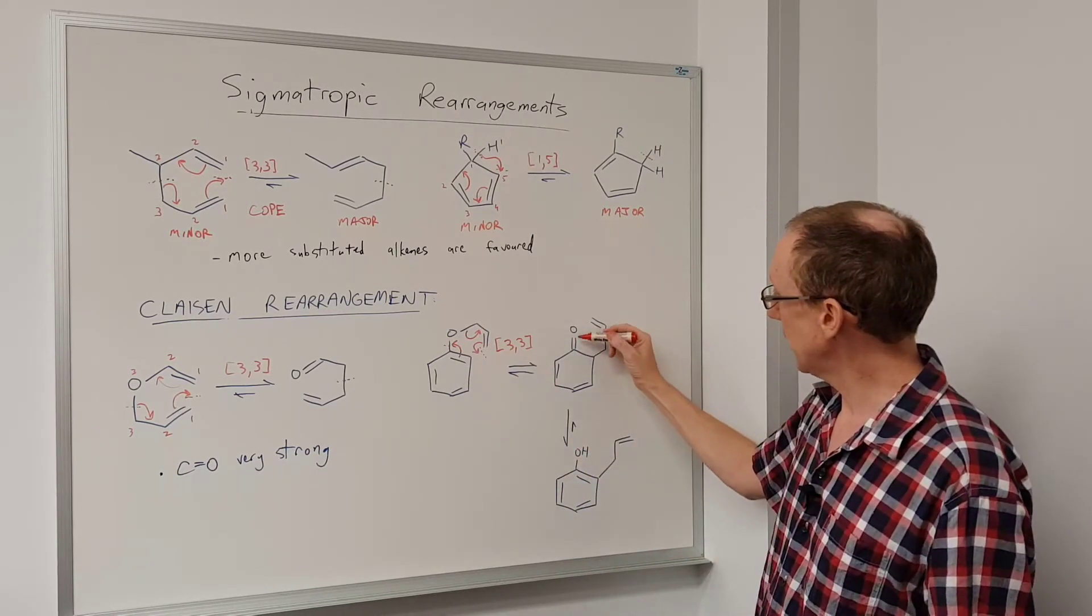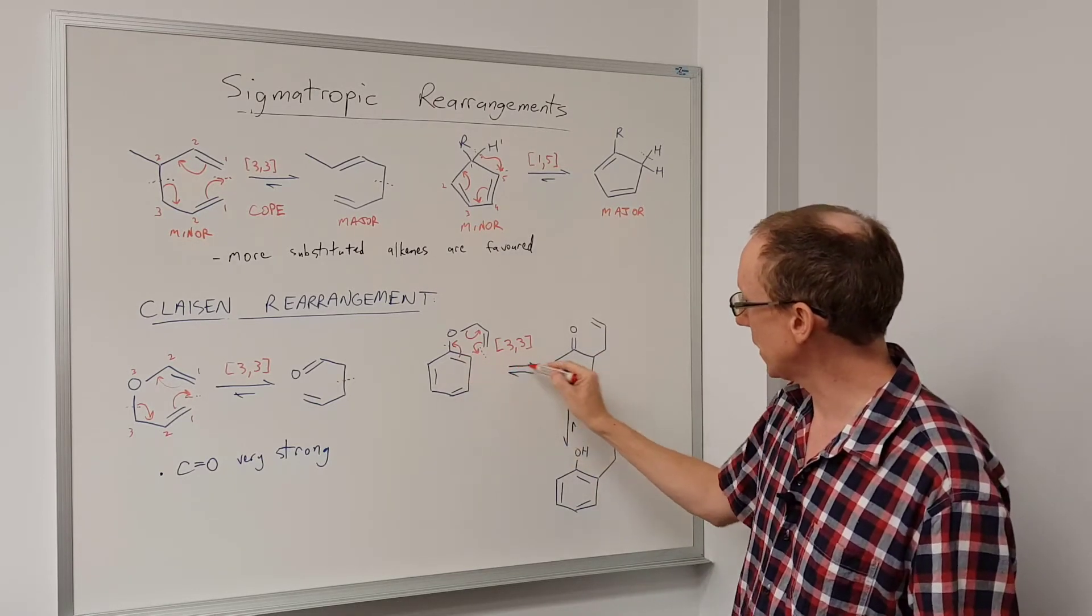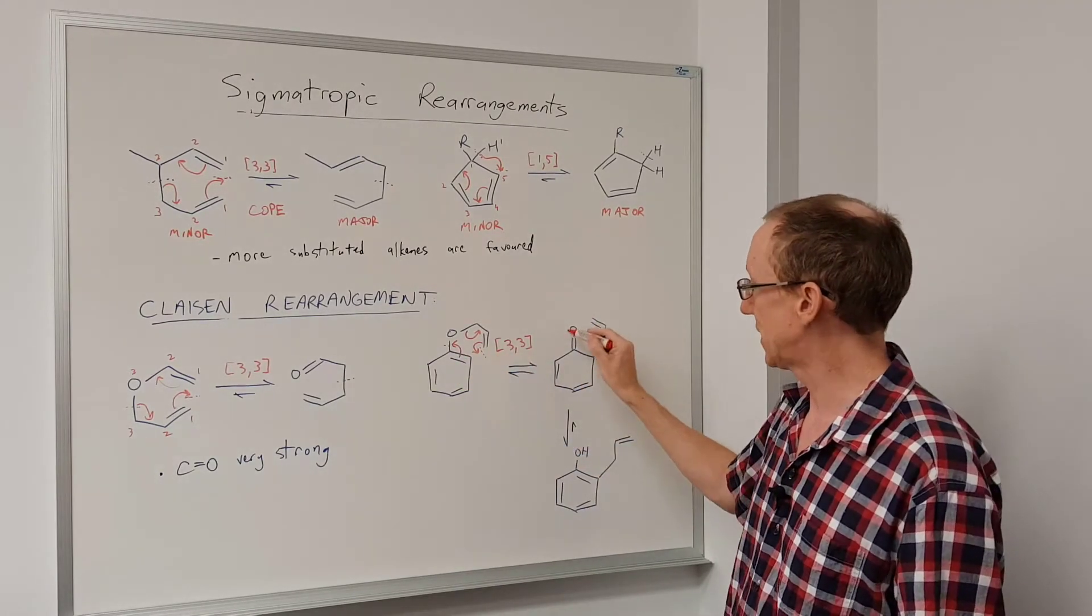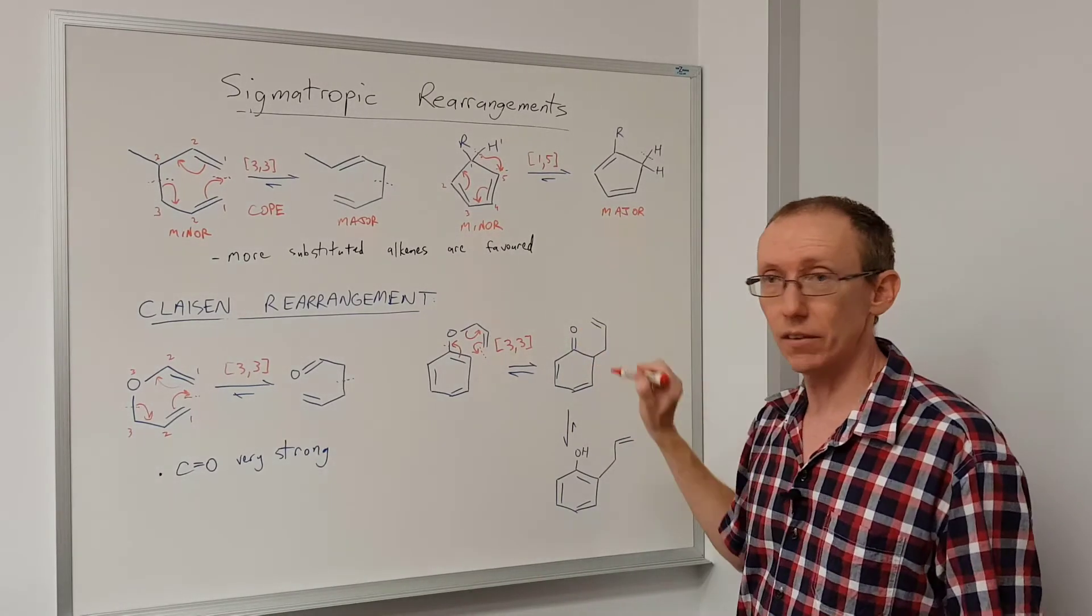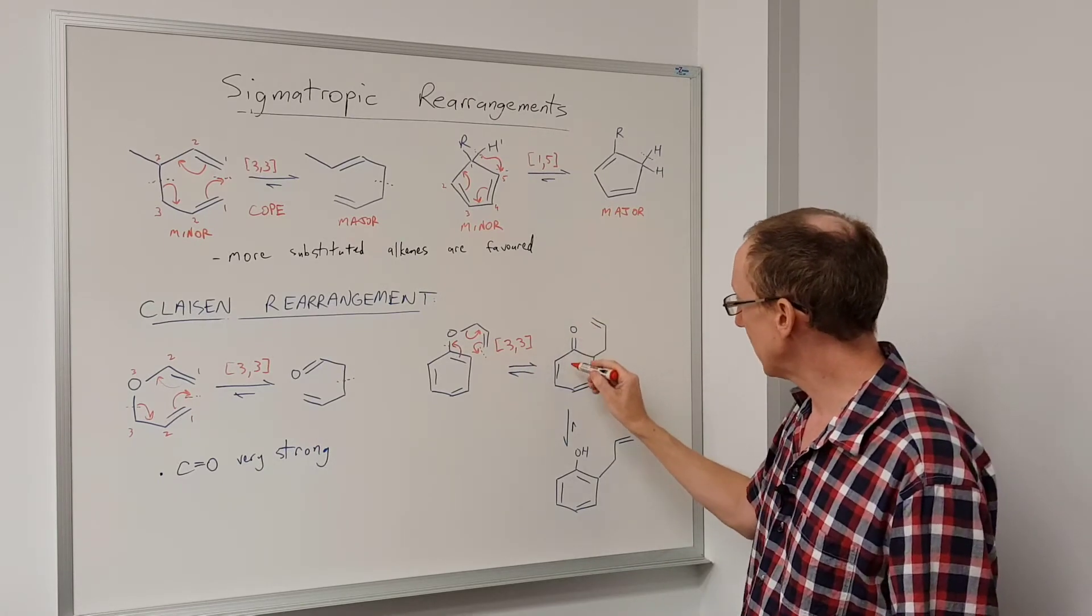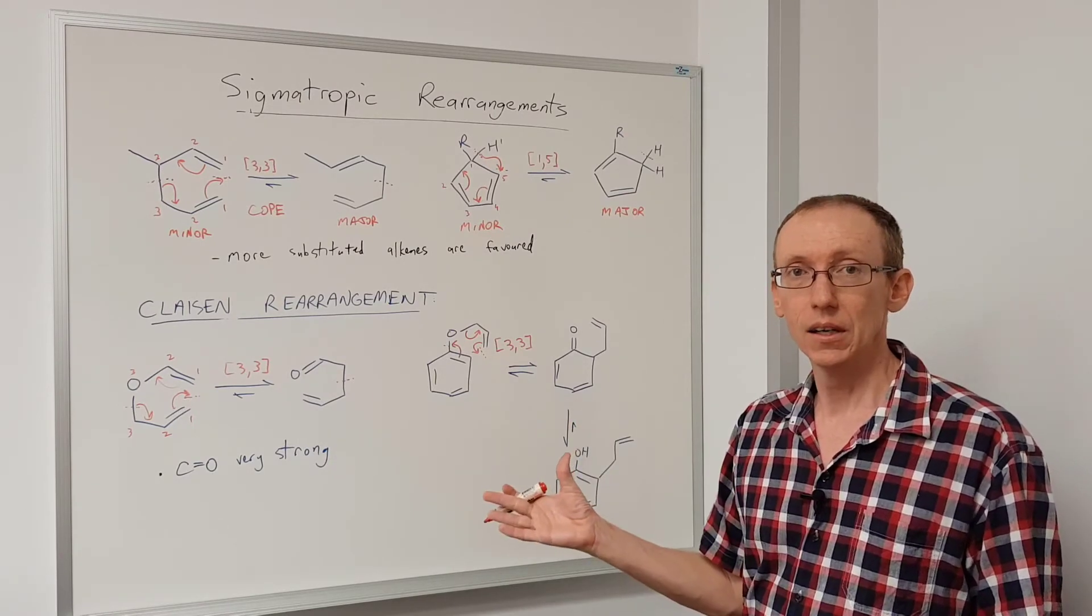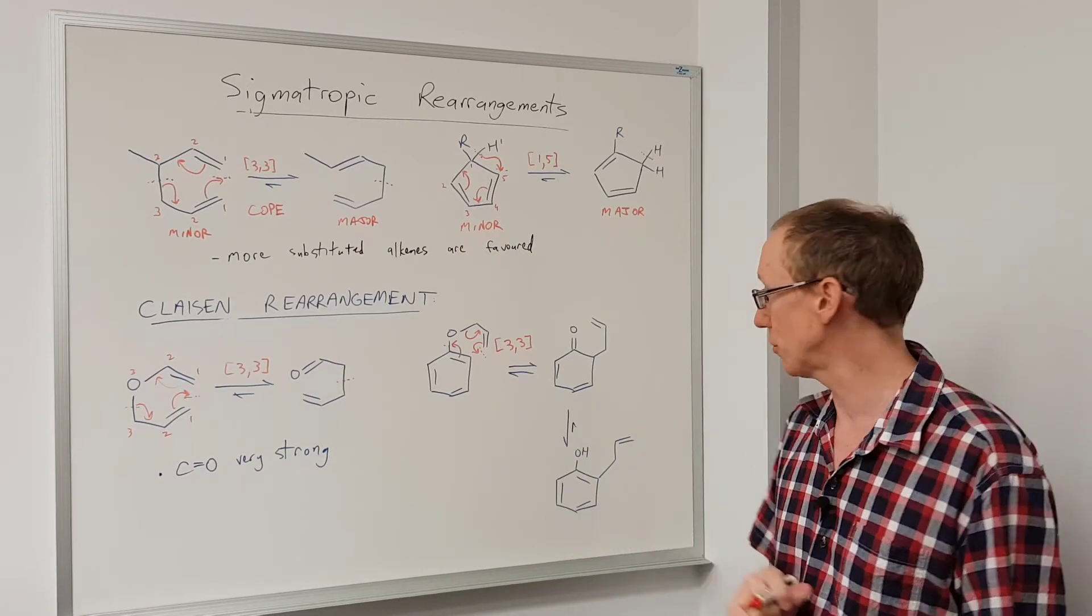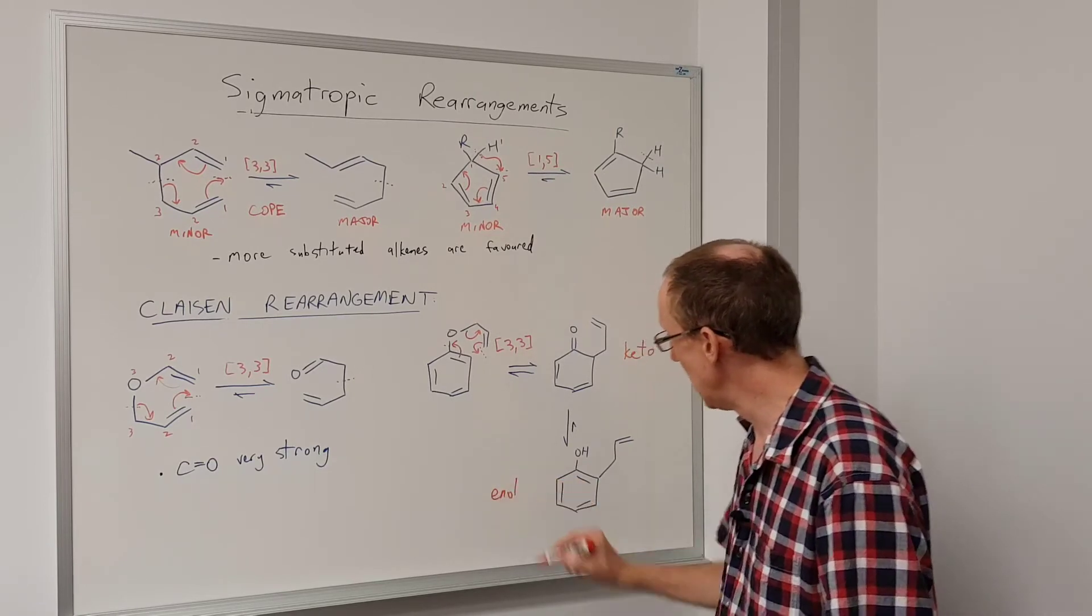However, the product has this ketone in a very special arrangement. You could think of this as being not a good thing because we're losing aromaticity of this benzene ring, but it's somewhat made up for by the fact that the carbonyl groups are particularly strong. The Claisen rearrangement for these sorts of components doesn't stop there because we know that ketones can tautomerize to an enol form. There's always that possibility of enol-keto-tautomerism. So that's the keto form, and this is an enol form.